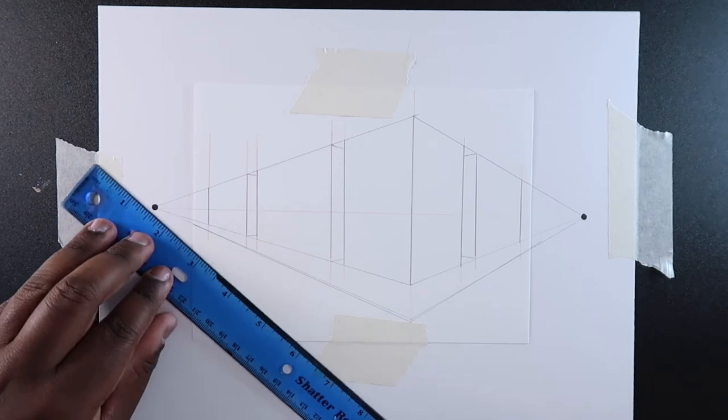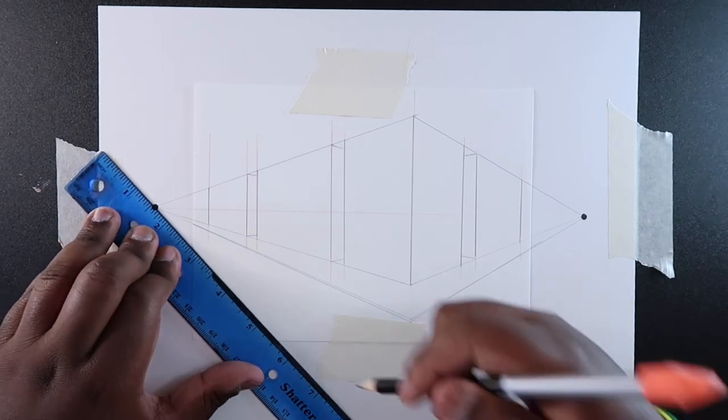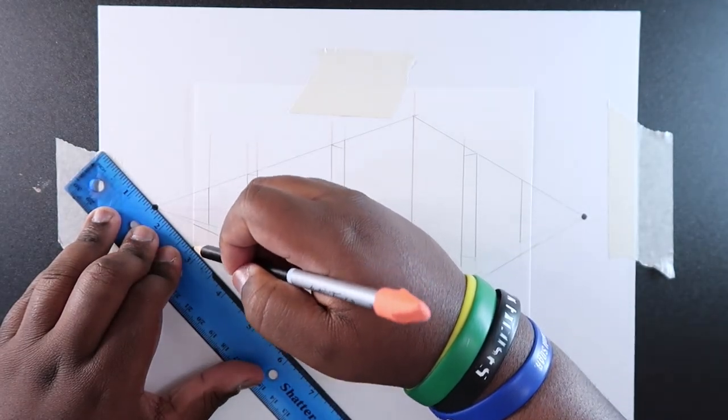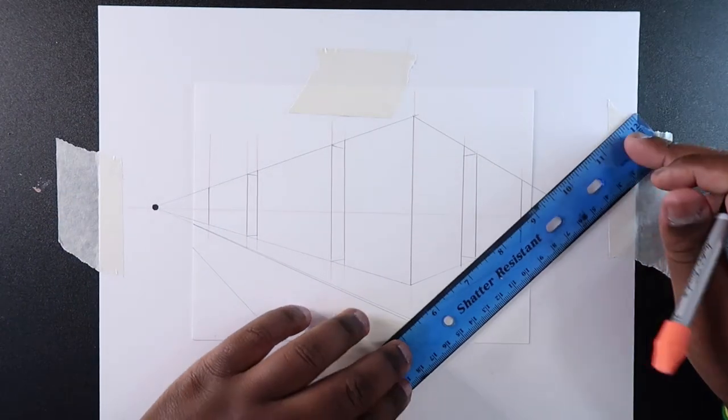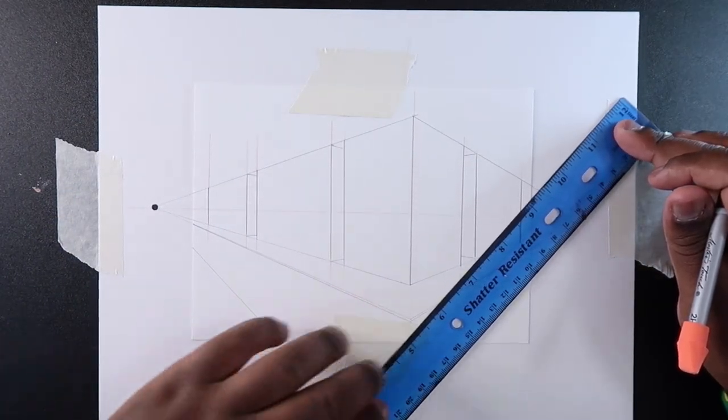The rest of that can be like a street. I'm just going to add another sidewalk on the other side by also using the vanishing point that I have on that side.